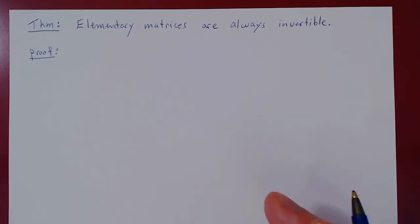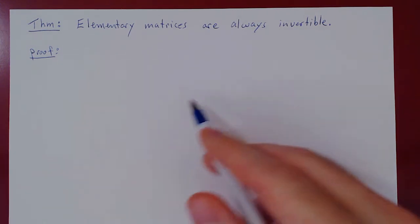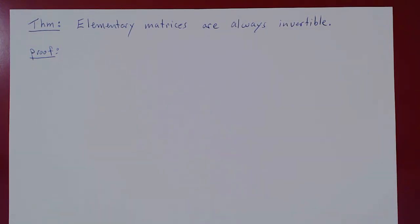All we have to look at is how we would invert each row operation, keeping in mind that if you apply a row operation directly onto a matrix, you can obtain the same result if you multiply instead on the left of that matrix by the corresponding elementary matrix. And because of that, the proof works out.